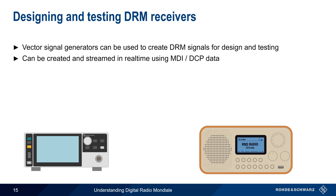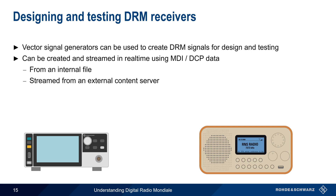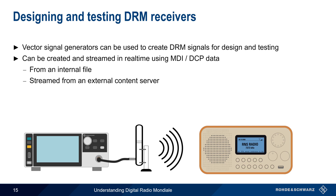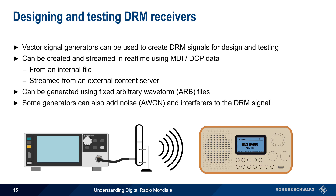Rather than using live broadcast signals, DRM receivers are most often designed and tested using vector signal generators to create user-defined DRM streams. The DRM signals are created and streamed in real-time using MDI and DCP data. This MDI-DCP data can be provided in the form of an internal file, or may be streamed into the generator from an external content server. The vector signal generator then transmits the modulated RF signal to the receiver either over a direct cable connection or radiated using an antenna. DRM signals can also be created using fixed predefined arbitrary waveform, or ARB, files. Some vector signal generators can also add noise and/or interferers to the generated DRM signal, allowing for more realistic test scenarios or testing under challenging conditions.